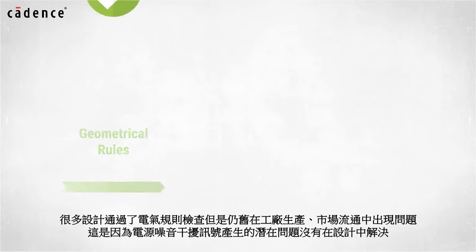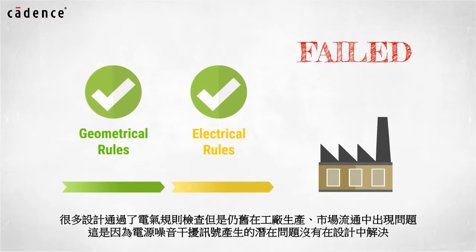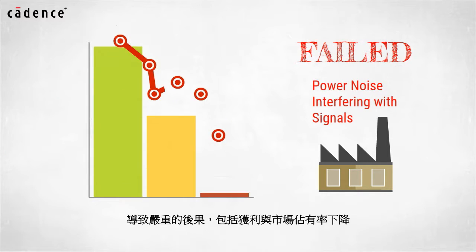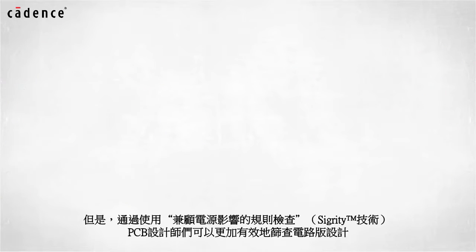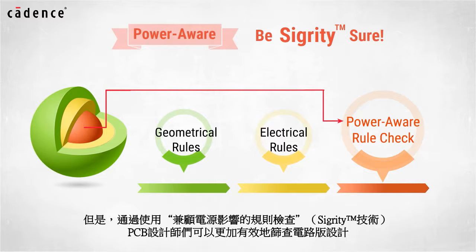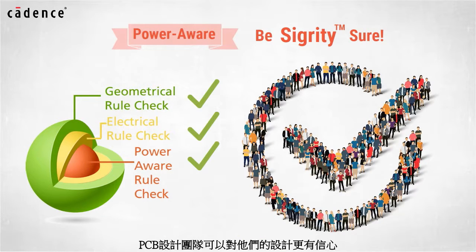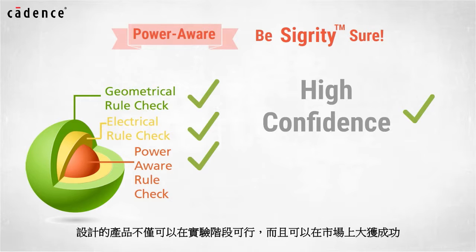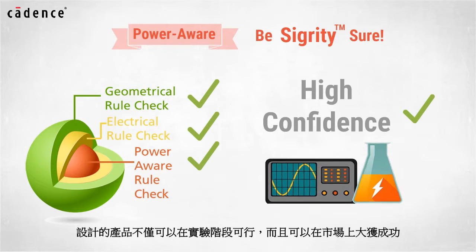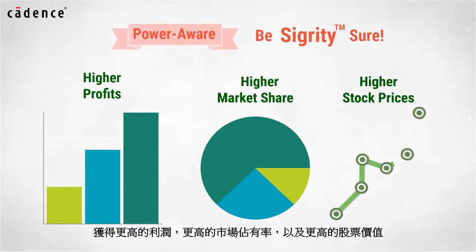A number of designs have passed these electrical rule checks but still failed either in the factory or in the field, because of the hidden problems caused by power noise interfering with signals, causing loss of revenue and market share. But now with the power-aware rule checks available in Sigrity technology, PCBs can be more effectively screened by PCB designers. Combined with power-aware detailed simulation, design teams can have high confidence that their designs will not only work in the lab but will also work long term in the field, resulting in higher profits, higher market share, and even higher stock prices.